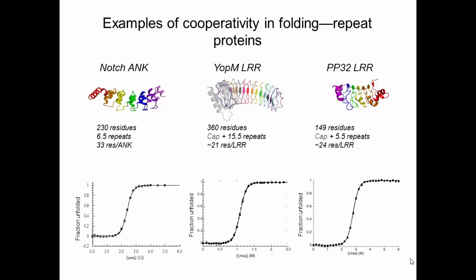This was rather surprising to us because proteins that have this kind of structure lack long-range contacts and they're architecturally modular, so we were expecting modular thermodynamics. But the fact that we see this high level of cooperativity, especially for the YopM leucine-rich repeat domain at almost 360 residues, was surprising to us, and we wanted to learn how this cooperativity worked.